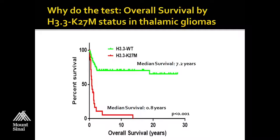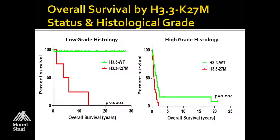If you break that out by histologic grade, high-grade histology in the thalamus is not good — both groups do quite poorly, but the longer-term survivors are those with wild-type histone. Those with the mutant histone had no survivors. In the low-grade histology, without a histone mutation, long-term survival of a thalamic low-grade glioma is over 95%. Whereas patients with a histone mutation overall do quite poorly — there are a couple of patients living longer, one about 7 years and one closer to 14 years, but in the end they all succumb to their disease.